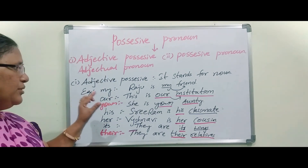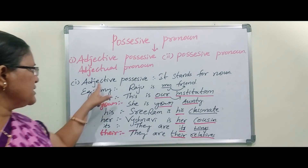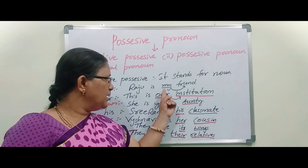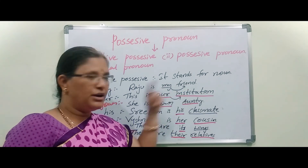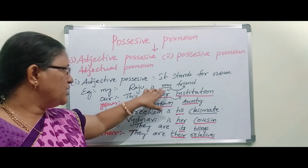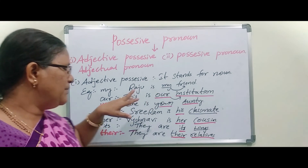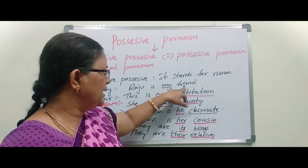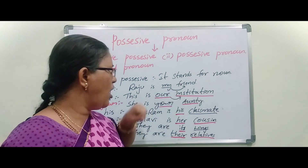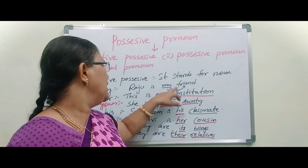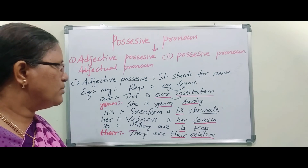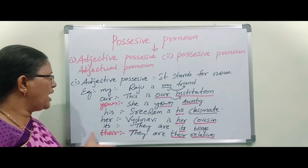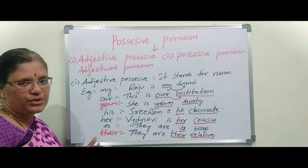So, we have to keep in mind that Adjective Possessive always talks about a noun. Immediately after the pronoun, a noun will be there. For example, 'my' is there, and immediately a common noun follows. That's why it comes under Adjective Possessive or Adjectual Pronoun. This is about Adjective Possessive.